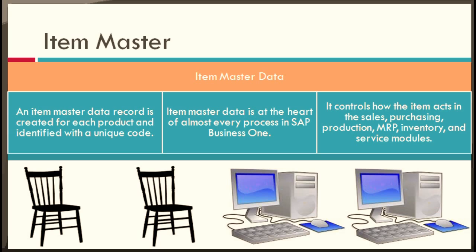For each item, the data that is relevant for a particular area or field in SAP Business One is used as reference for purchasing, sales, production, warehouse management, and other accounting purposes. You use the item master data window to update, search, and maintain item data. The item master data record is created for each product and is identified by a unique code.